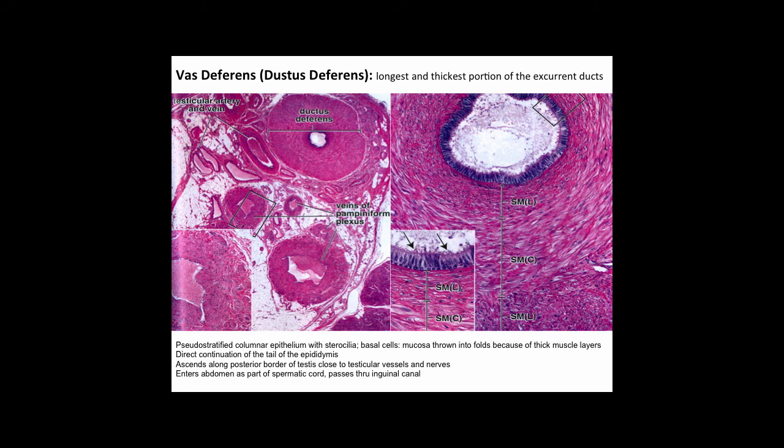The vas deferens has three distinct smooth muscle layers: an inner longitudinal layer, a middle circular layer, and an outer longitudinal layer. Note the multiple cross sections of veins of the pampiniform plexus running near the vas deferens — these play a critical role as a countercurrent cooling mechanism, lowering blood temperature by a few degrees entering the testis, which is necessary for normal sperm development and motility of the flagella.